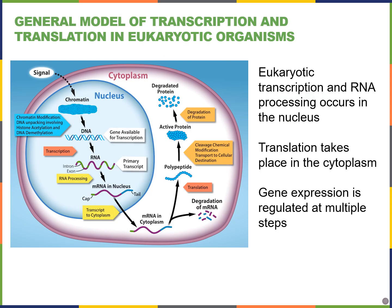This picture from our book shows where gene expression can be regulated at the different steps. We can regulate chromatin through chromatin modifications. DNA methylation usually silences gene expression by making DNA wrap more tightly around histone proteins. In contrast, histone acetylation loosens how tightly DNA is wrapped around histone proteins, making it more accessible. We can prevent DNA from being available for transcription by methylating it to silence the gene.